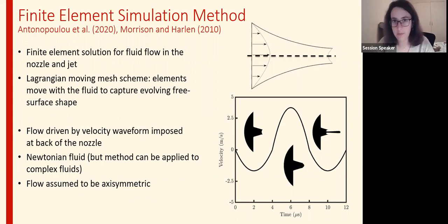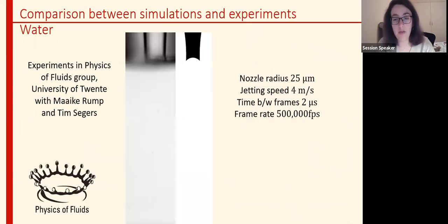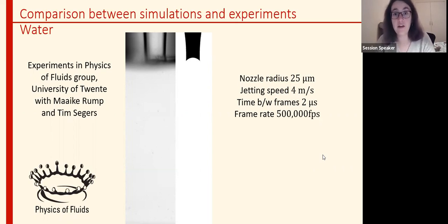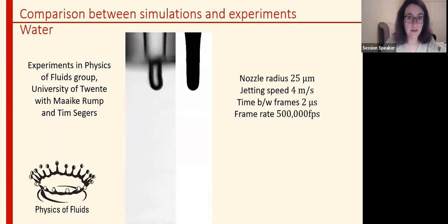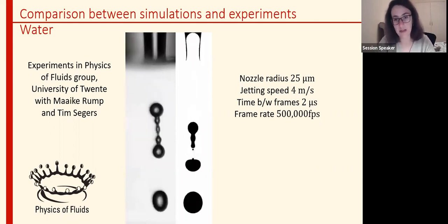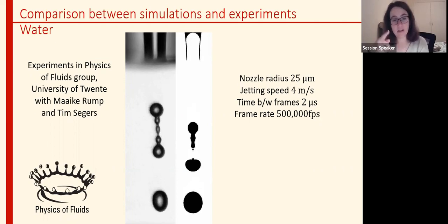For this work we collaborated with the Physical Fluids group with Michael Rump and Tim Segers, and conducted experiments where we first validated the Newtonian — pure solution — case with no surfactants. These are the specifications for the experiment and as we can see we have very good agreement between the jetting behavior for the pure solution and the simulation. Small discrepancies can be attributed to not precisely knowing the velocity waveform — we can generate the pressure waveform but the velocity waveform for the initial conditions is estimated from the meniscus motion.